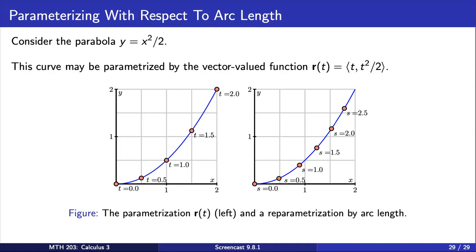For instance, the right graph shows points corresponding to various values of distance traveled, denoted by s. We call this an arc length parameterization.